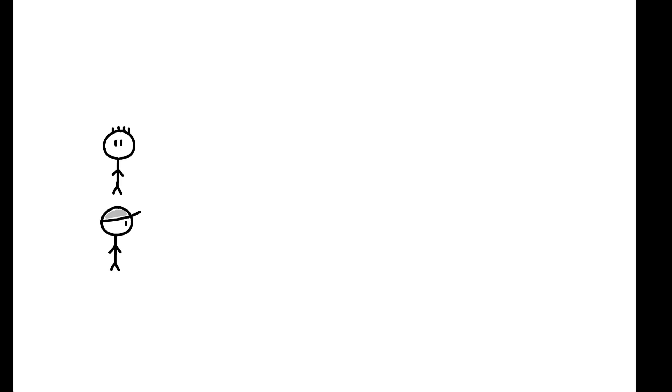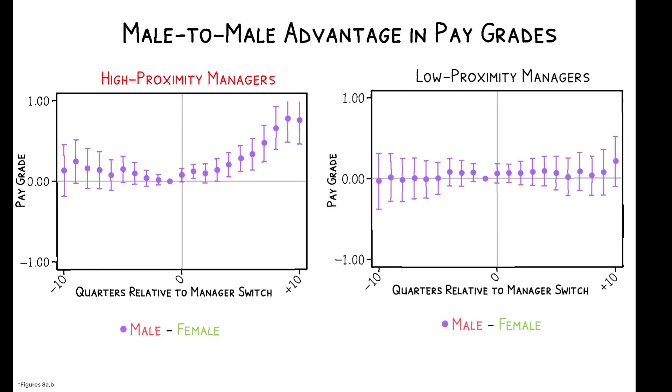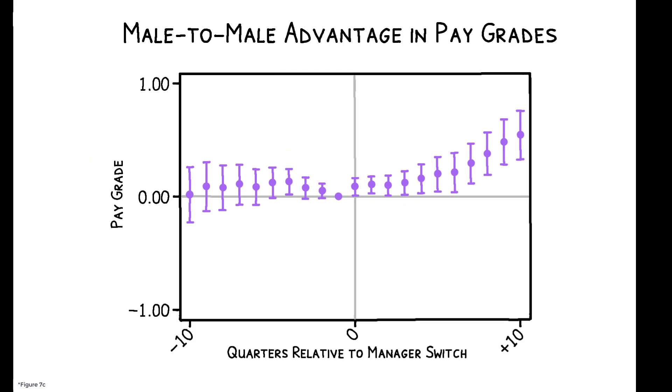Transitioning to a male manager increases the percentage of breaks male employees share with their managers, and the male-to-male advantage is concentrated in cases where employees and managers work in close proximity. Overall, ten quarters after the transition, the male-to-male advantage is 0.54 pay grades, or around a 14% increase in salary.